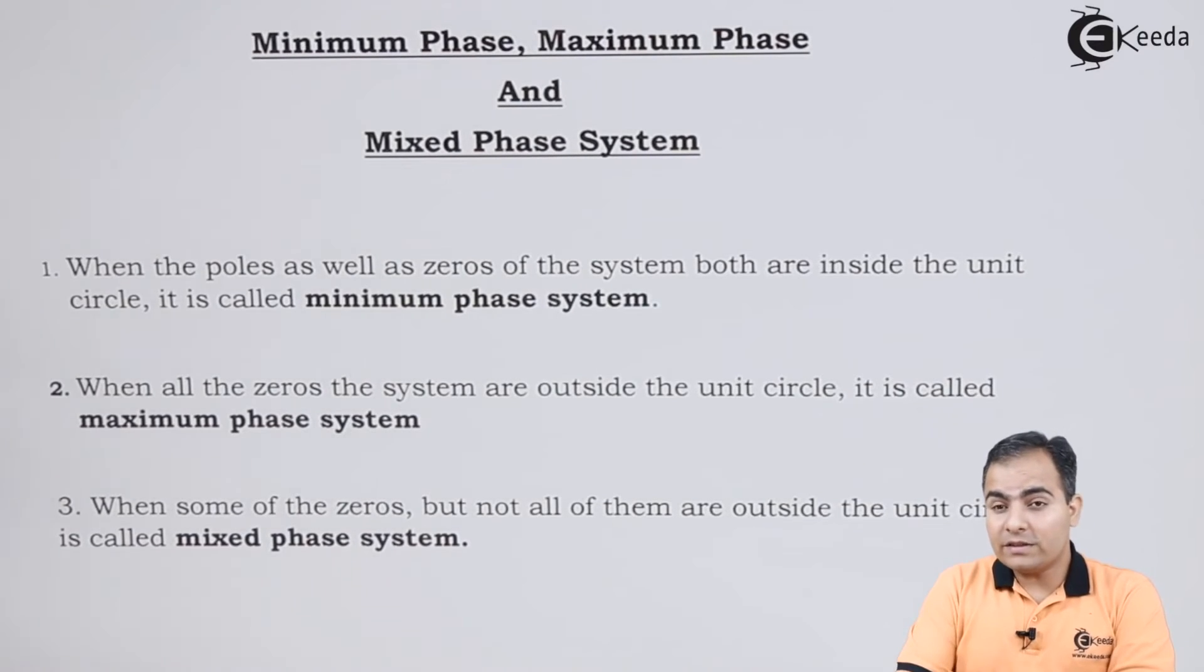The third definition: when some of the zeros are lying inside and some are lying outside the unit circle, that system is called a mixed phase system.